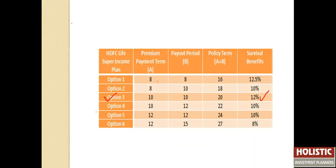HDFC Life Super Income Plan comes with 6 different options with different premium payout terms and different payout terms. For example, Option 1 has a premium payment term of 8 years and payout term of 8 years. In this example, we are choosing Option Number 3, where you have to pay the premium for 10 years. The payout period will also be 10 years and the policy term will be 20 years. So the premium payment term plus payout term equals the policy term.